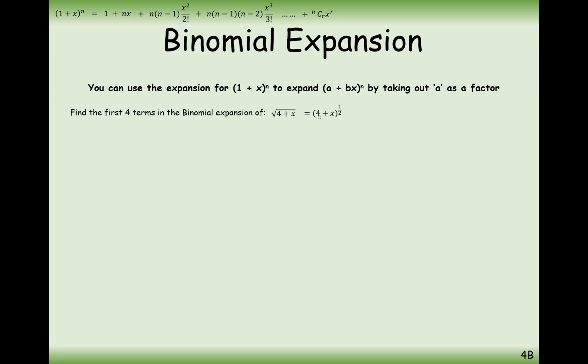Now we're going to get rid of the 4 from the brackets. We're going to make it a 1 by pulling out a factor of 4 from the brackets. But remember that the 4 is being square rooted just as much as the whole bracket is being square rooted.